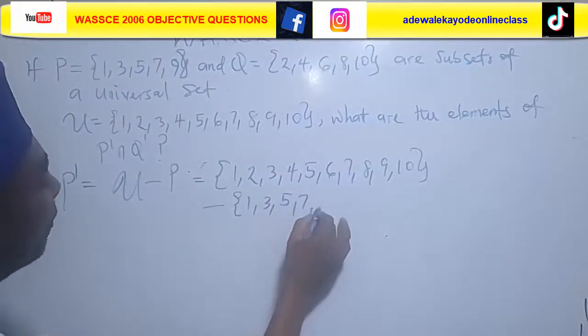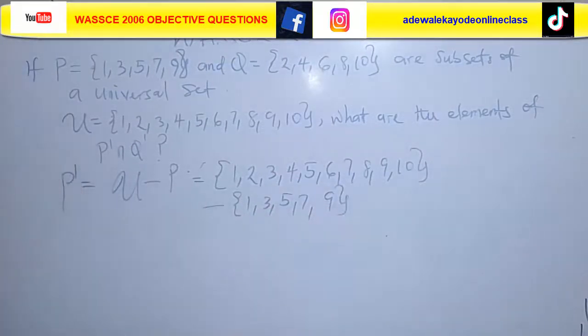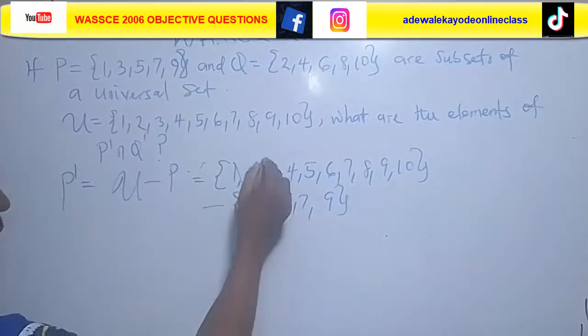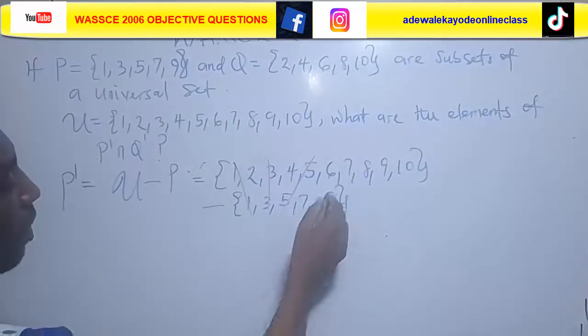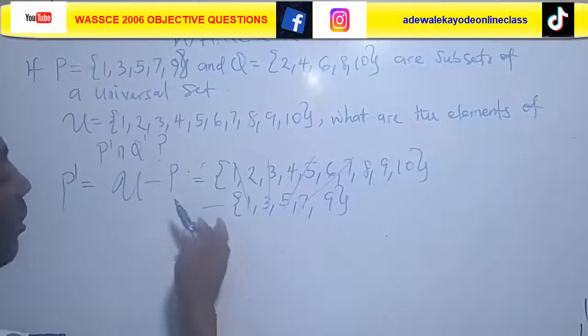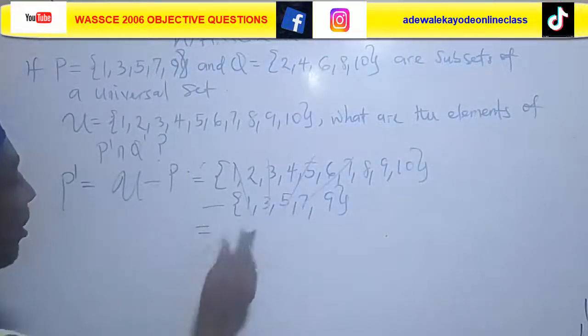We have to take our set P away from this. Set P is {1, 3, 5, 7, 9}. Take them away from the universal set.